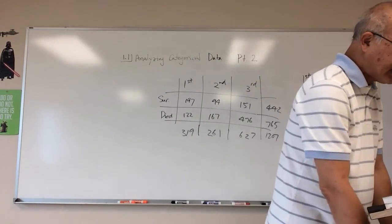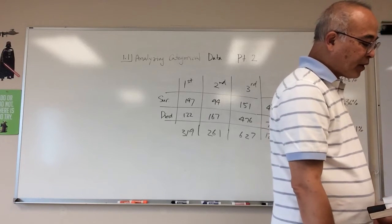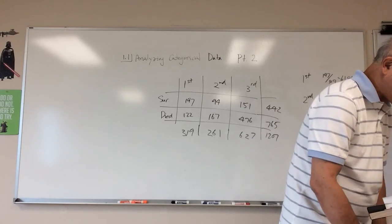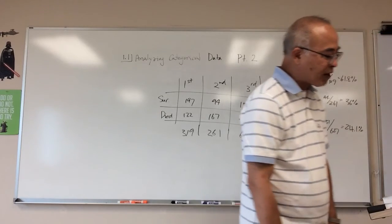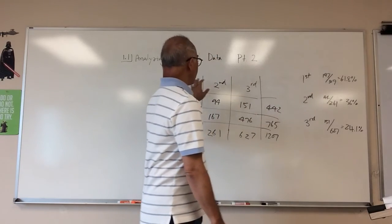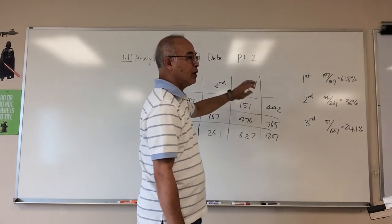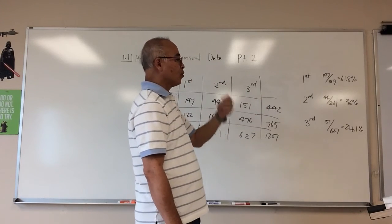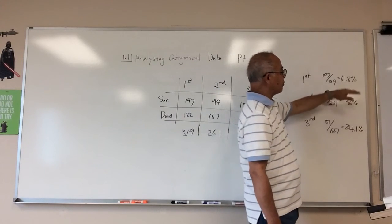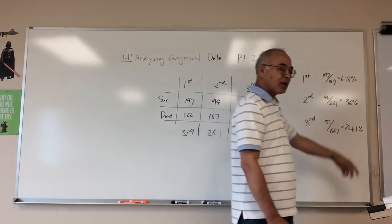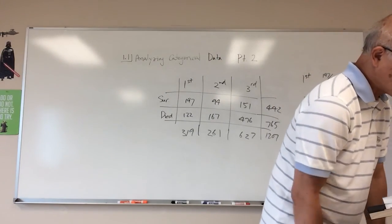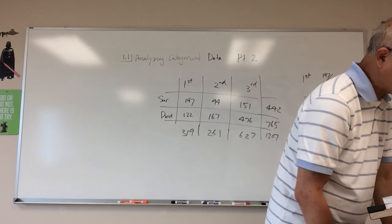If you were first class, you had a much better chance of surviving — 61.8% versus third class at only 24.1%. You can draw the segmented bar graph as shown on page 21. Part B asks: what does the graph reveal about the association between class and survival? The first class had the highest percentage survival rate, followed by second class, then third class.